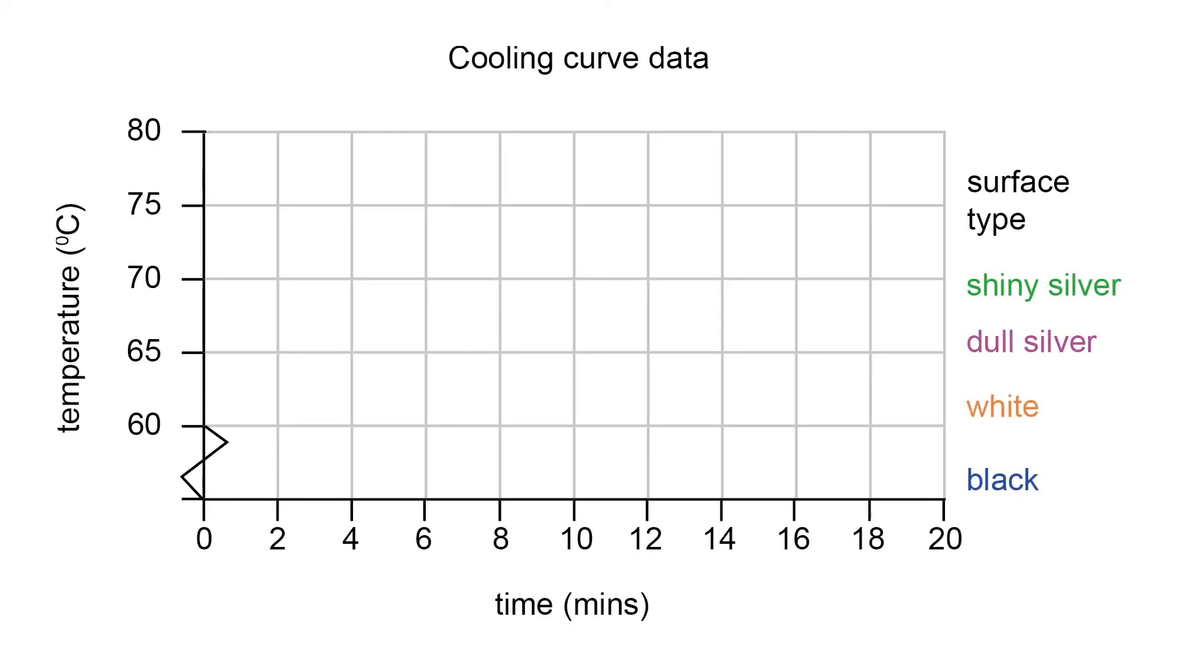You will now need to draw a scatter graph to show temperature against time. When plotting the graph, make sure you put the temperature along the y-axis and the time along the x-axis. You should be able to plot all four sets of results on the same graph and join each set of points with a smooth curve.